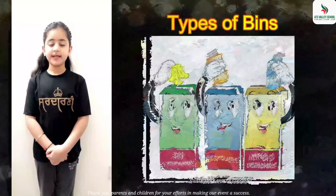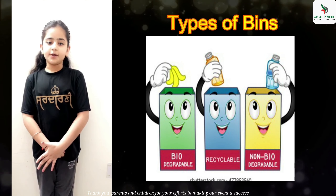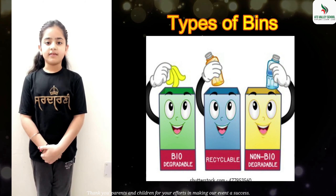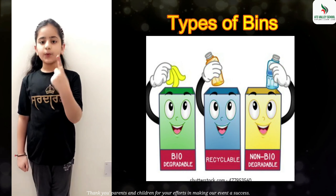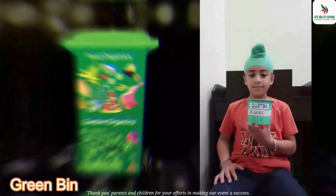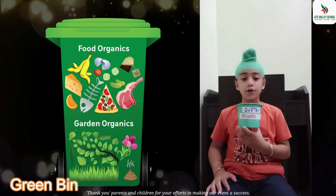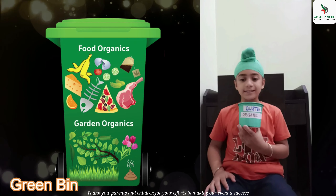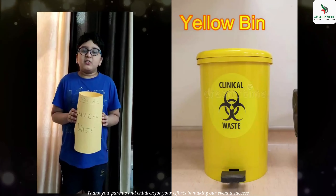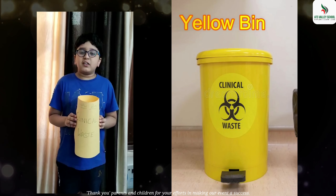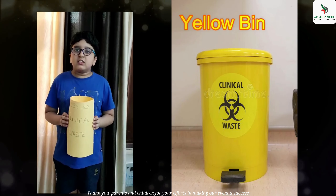Waste management has decided that we have to throw different kinds of waste in different bins. They have suggested three kinds of bins: yellow, green and blue. Green bin is used for disposal of biodegradable waste which can be converted into manure, for example, peels, cooked or raw vegetables. Yellow bins are used for throwing clinical waste, for example, syringes, wax, blood.